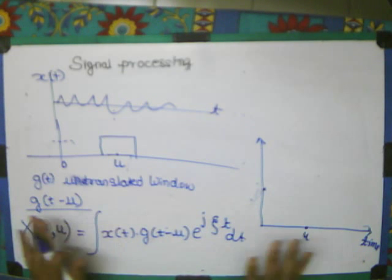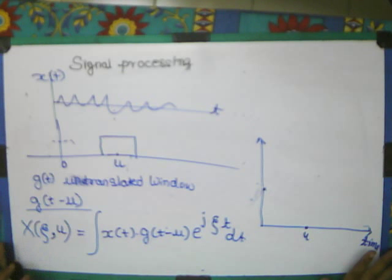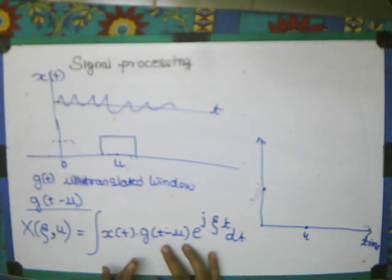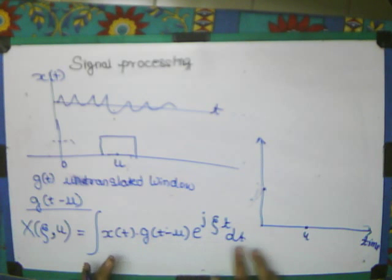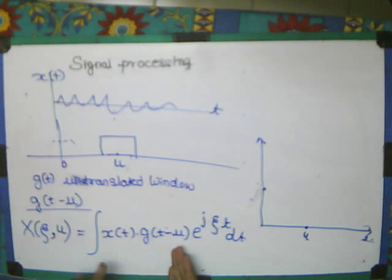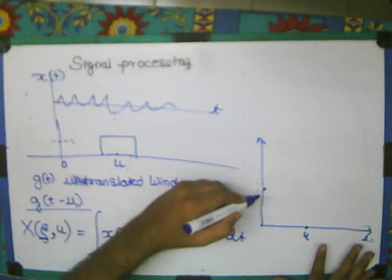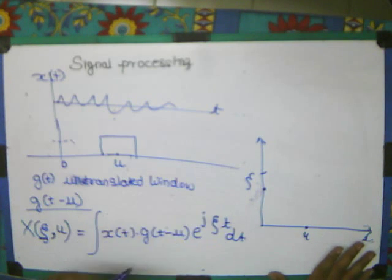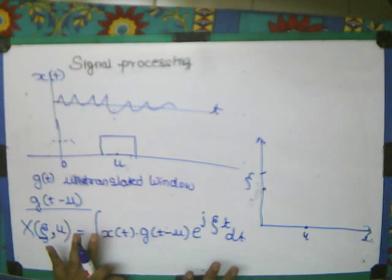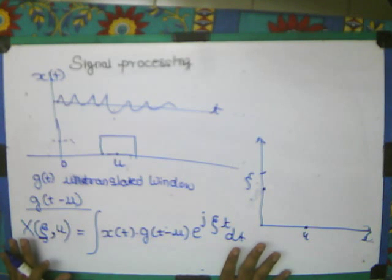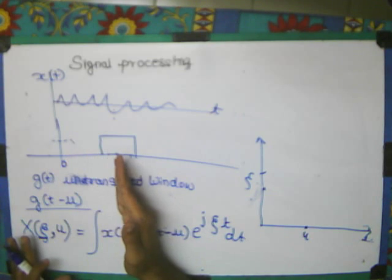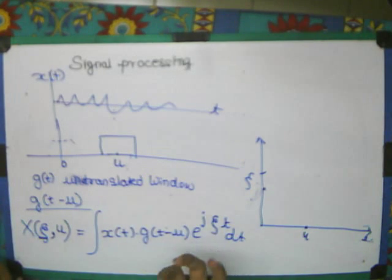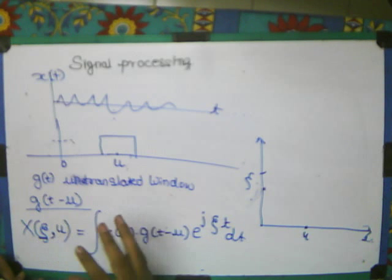So what will be the Fourier transform? I am multiplying x of t into g of t minus u, times e raised to the power j omega t dt. This integration will give me a function. This is the Fourier transform formula. Now, in earlier Fourier transform, we simply had x of omega. But now we have another variable, which is how much I am shifting. x of omega, u - because as soon as I shift this u, this value of the frequency spectrum changes. And for better understanding, what we write this as zeta. So this x of zeta comma u is something - it is shifted by u, and the frequency at this zeta position will be some value which I will be getting.